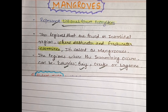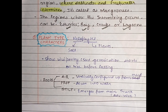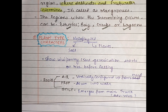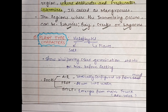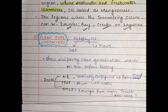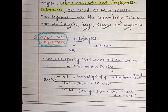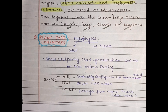Ab hum dekhte hain plant type characteristics ke baare mein — yaani ki jis type ke plants mangroves wale region pe paaye jaate hain, woh kya characteristics show karte hain. Joh plants dekhe jaate hain unko hum kehte hain halophytes. Halo stands for salt, phytes stands for plants. Us region pe salty water present hai, toh wahan ke jo plants hain unki salt ko tolerate karne ki capability hoti hai, unko hum kehte hain halophytes.